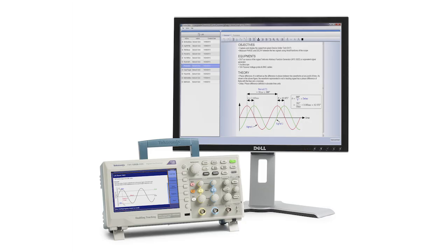The integrated courseware feature of the TBS-1000B EDU eliminates the need for printed manuals by displaying lab content directly on the oscilloscope, providing educators with a way to efficiently manage and update lab material and reduce printing costs.